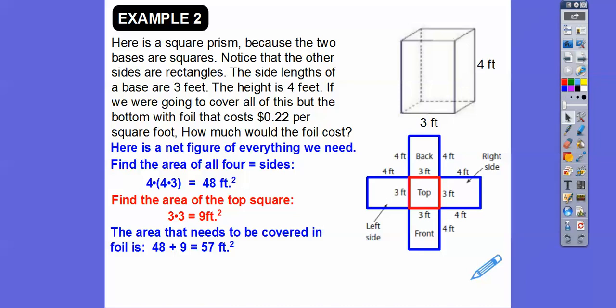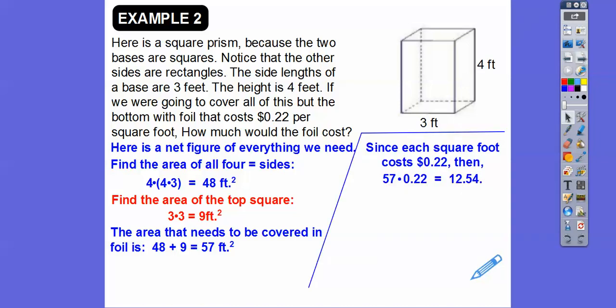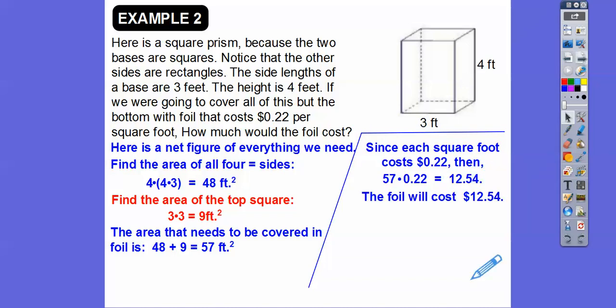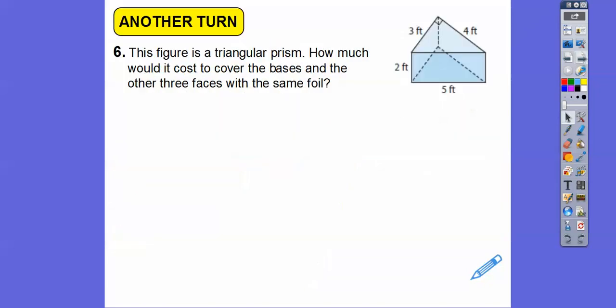Since each square foot of foil costs 22 cents, we multiply 57 square feet times 22 cents and get $12.54. Always answer your question in the context of the problem — how much will the foil cost? It's going to cost $12.54. We put a dollar sign in front of that. The number 12.54 doesn't mean anything without that context.